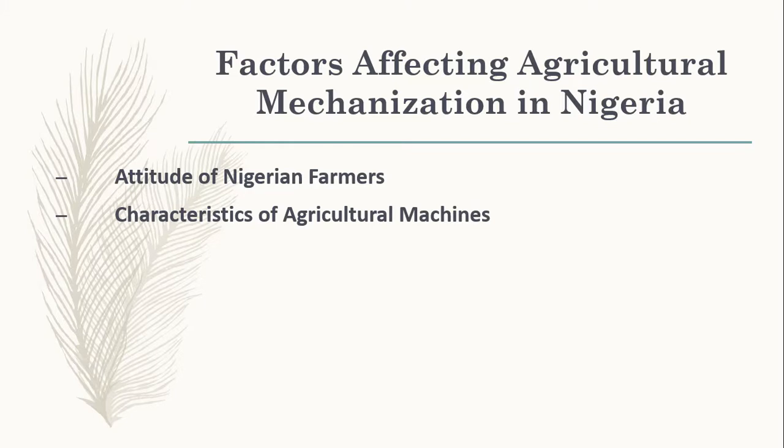Number two, characteristics of agricultural machines. Most of our farmers in Nigeria are illiterates living in villages cultivating crops. Most of them don't have the knowledge to operate those machines. Some of these machines are very heavy and sophisticated, and require a lot of intellect to operate.